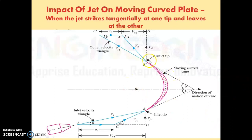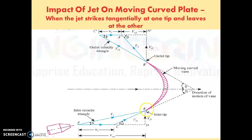This is the example where this is a pipe, this is a nozzle, and the water from the nozzle strikes the plate tangentially and it moves out and comes out from the other tip. This is the inlet tip at which the jet enters the vane or plate, and this is the outlet tip at which the jet exits the plate or vane.